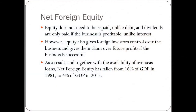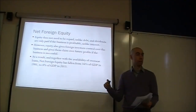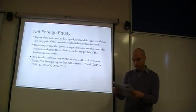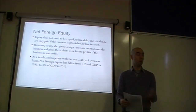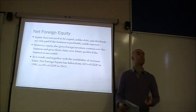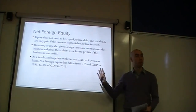Turning to net foreign equity: equity does not need to be repaid — shares are very rarely bought back, unlike debt — and dividends are only paid if the business is profitable, unlike interest. However, equity gives foreign investors control over the business and claims over future profits. As a result, net foreign equity has fallen from 16% of GDP in 1981 to just 4% of GDP in 2013, while net foreign debt rose from 6% to 50%. Australia has shifted from predominantly equity-financed to predominantly debt-financed foreign liabilities.